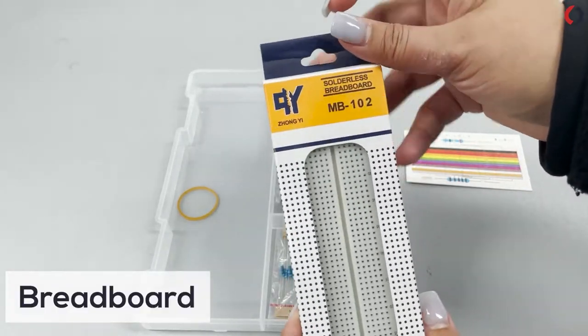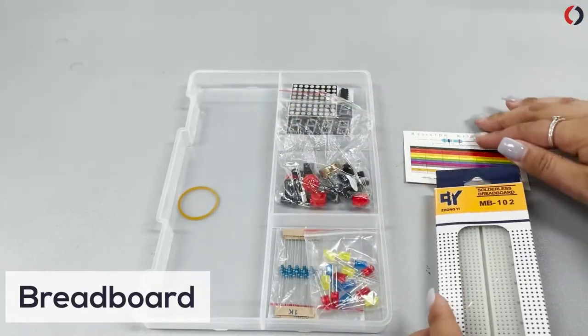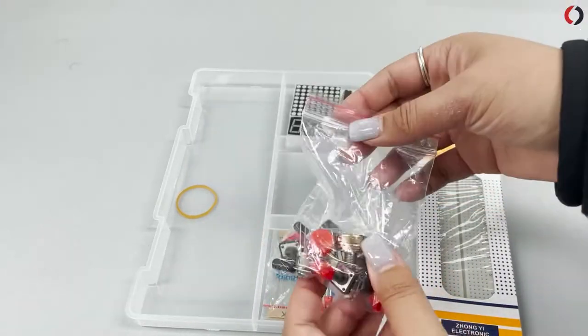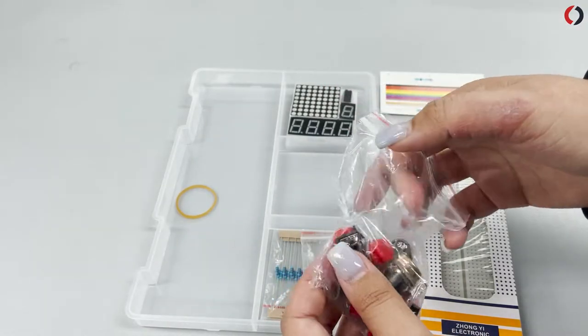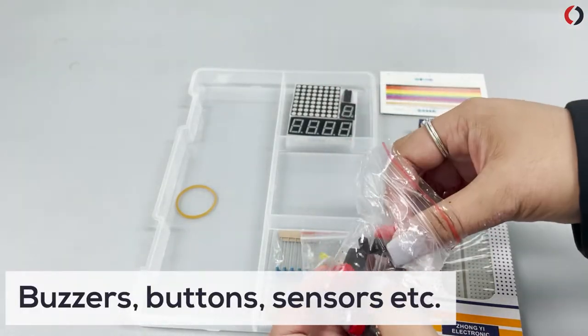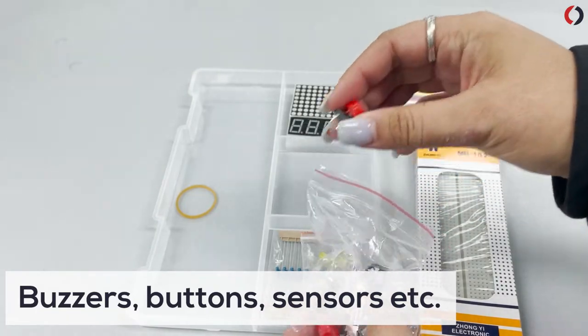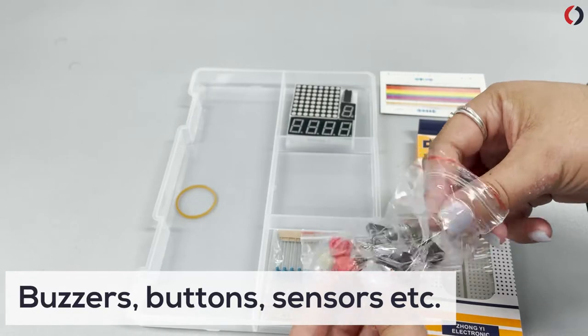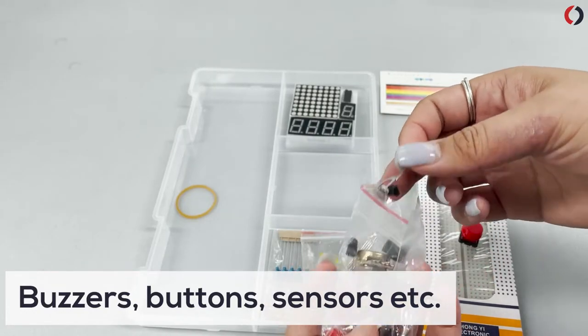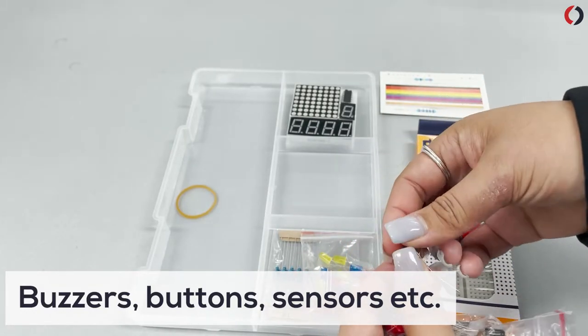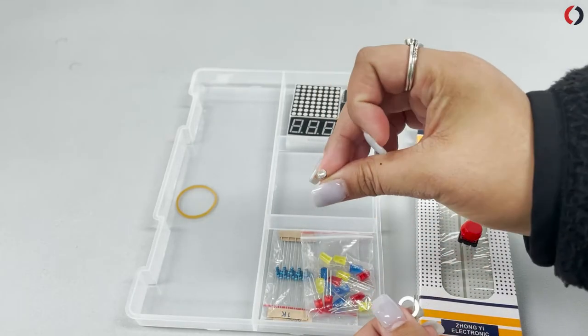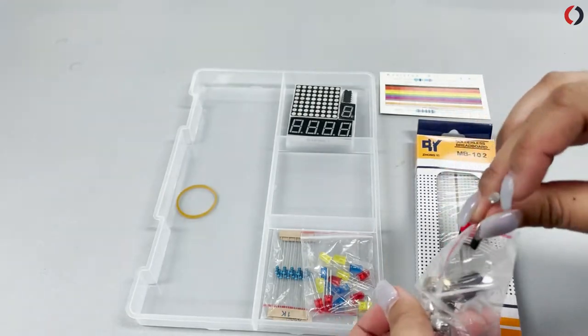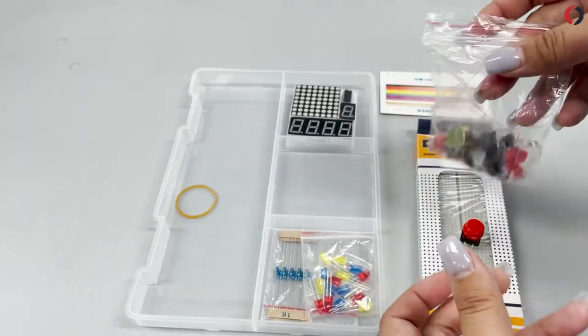You have your breadboard, which comes in this box. You can take it out. I'll just keep mine in there for now. Then you have a bag of an assorted bag of things. So you have maybe like a button in here. You also have an LDR here. You have an LDR there. You can see that. So yeah, it's just an assortment of things in there.